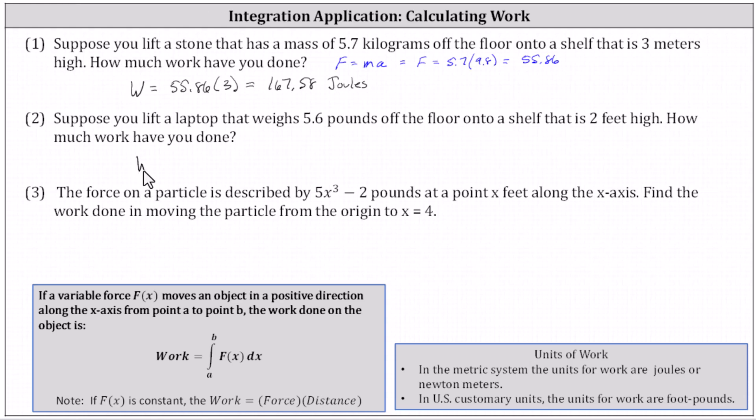we know the work W is equal to the force of 5.6 pounds times the distance of two feet, which equals 11.2 foot pounds.